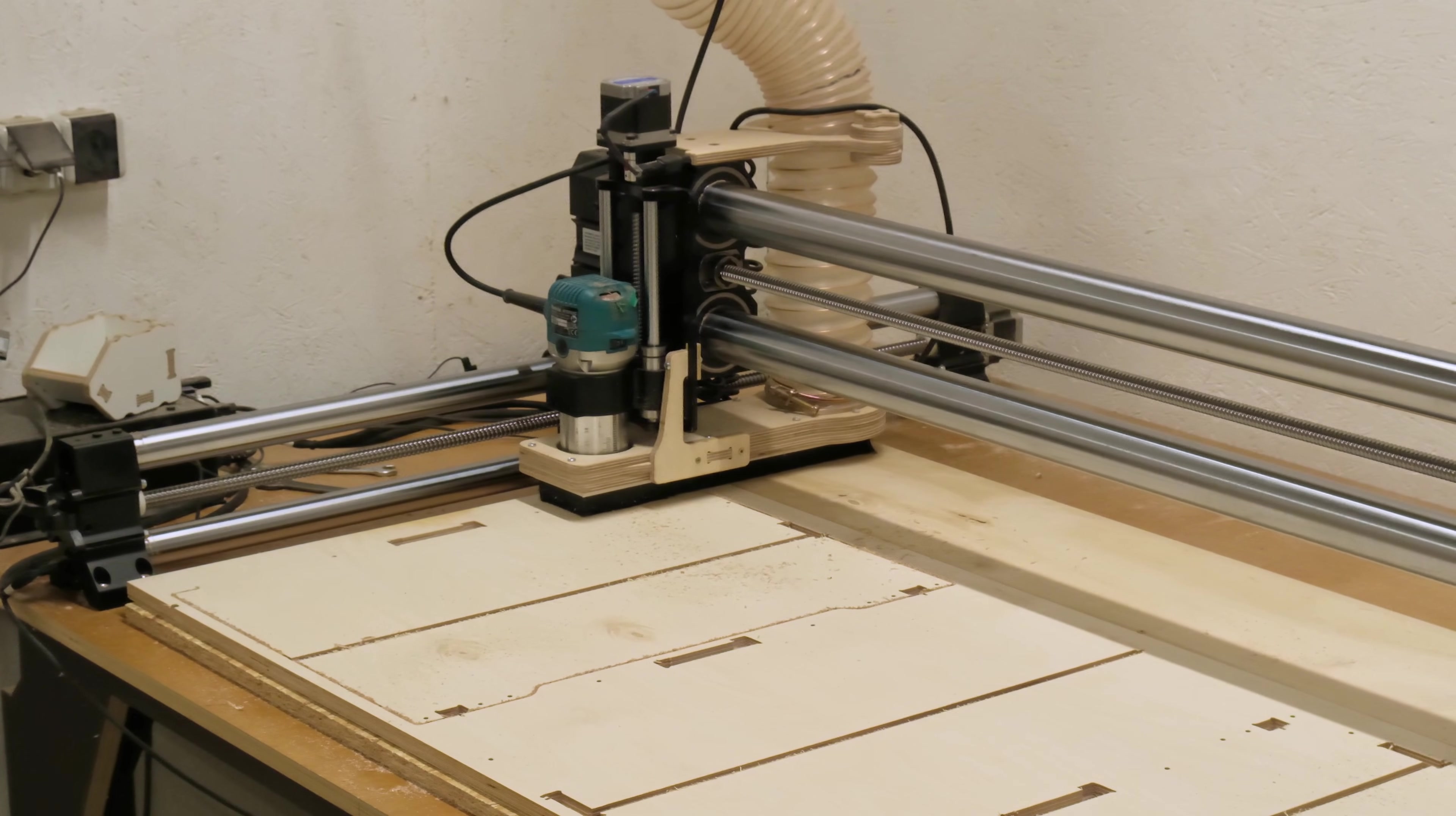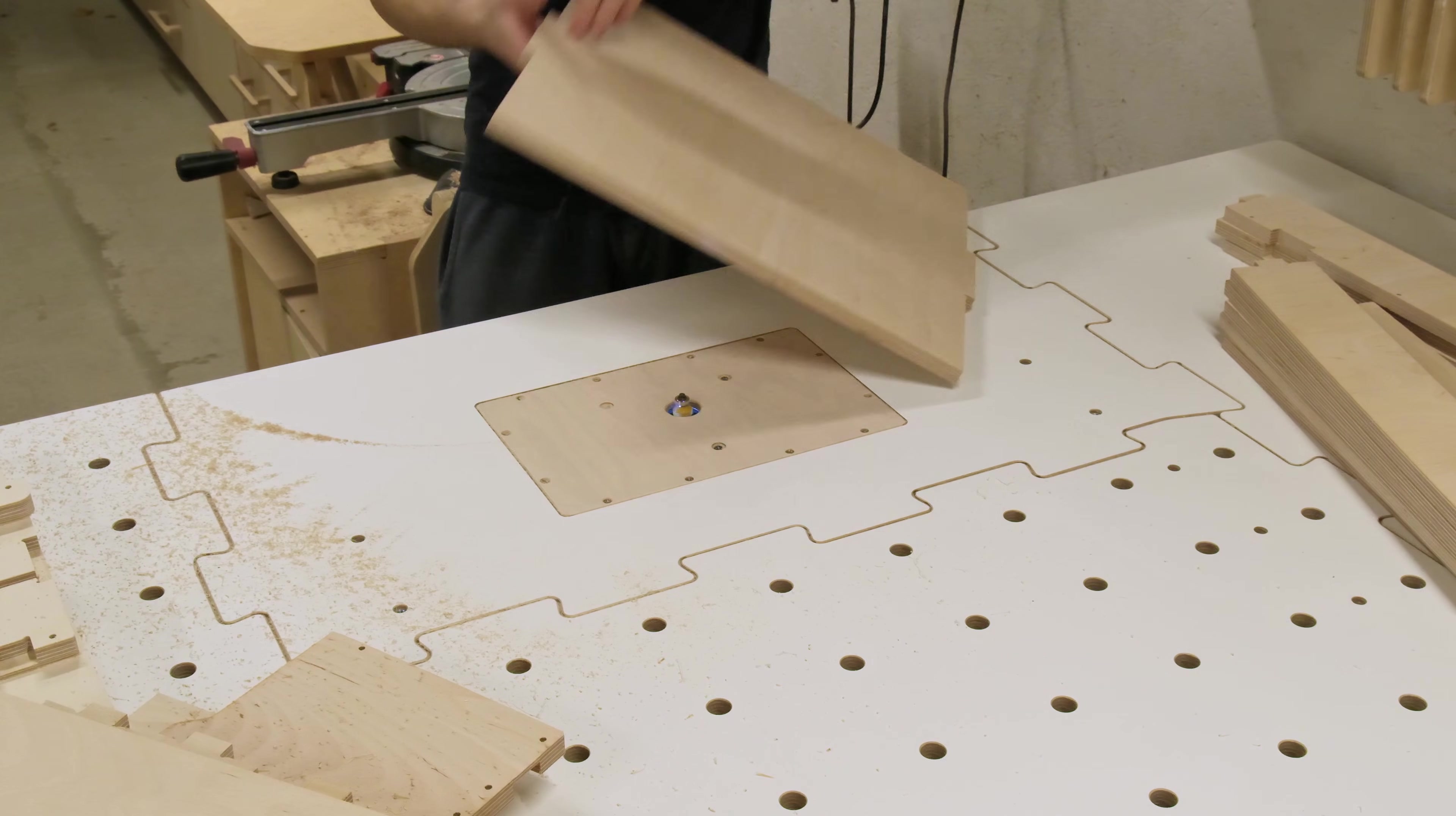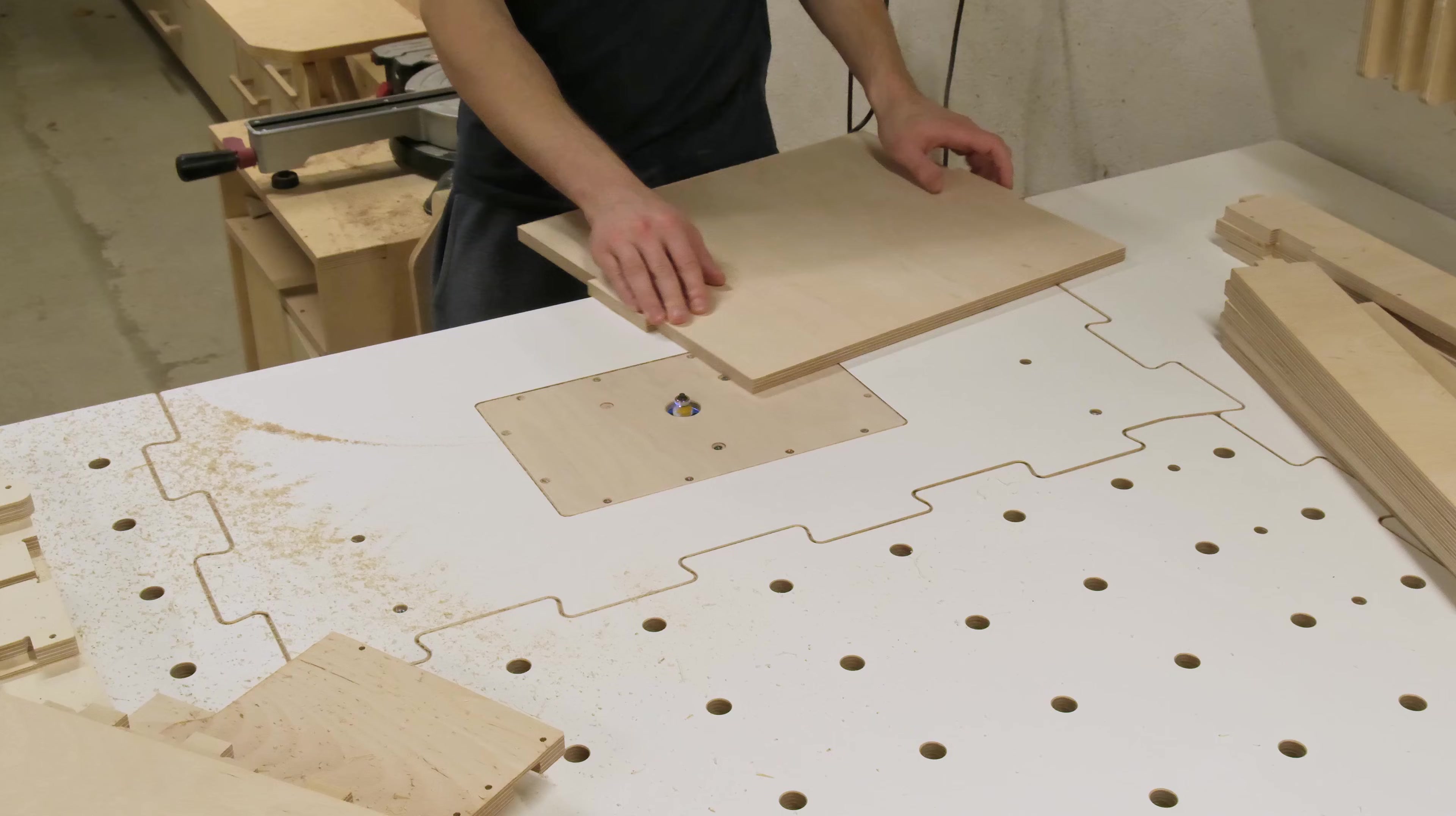Once the first batch is done, we can run the CNC on the next sheet while trimming the edges on the previous batch. Partial automation saves a lot of time.